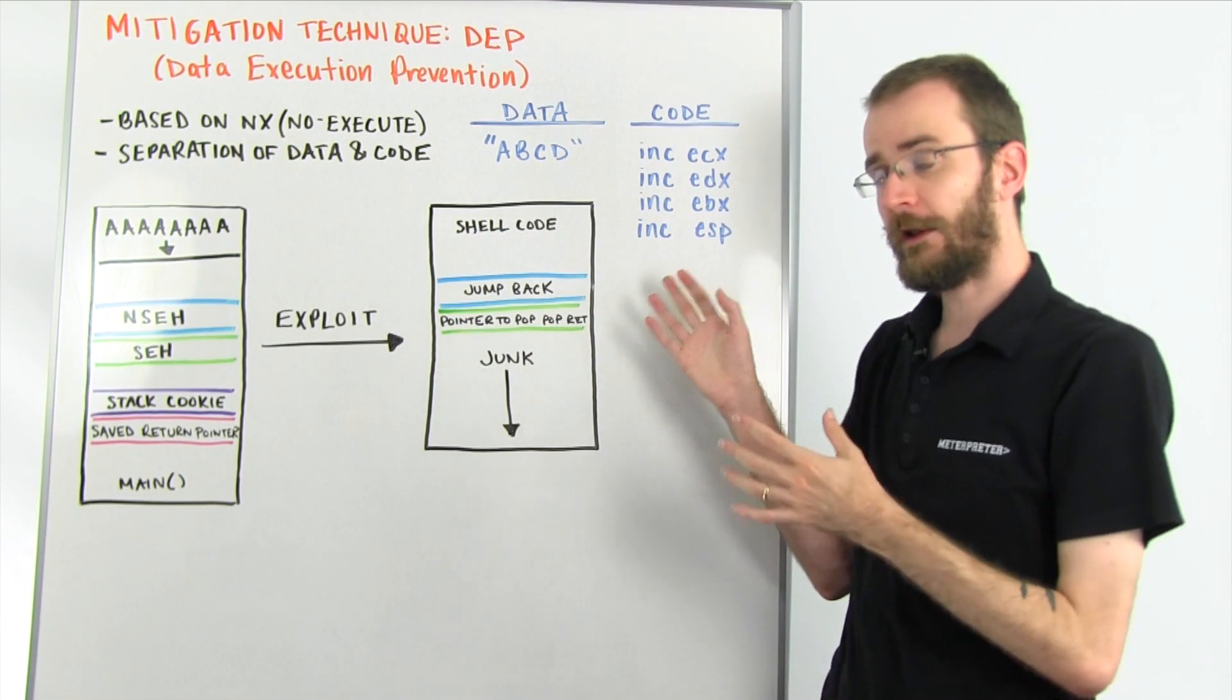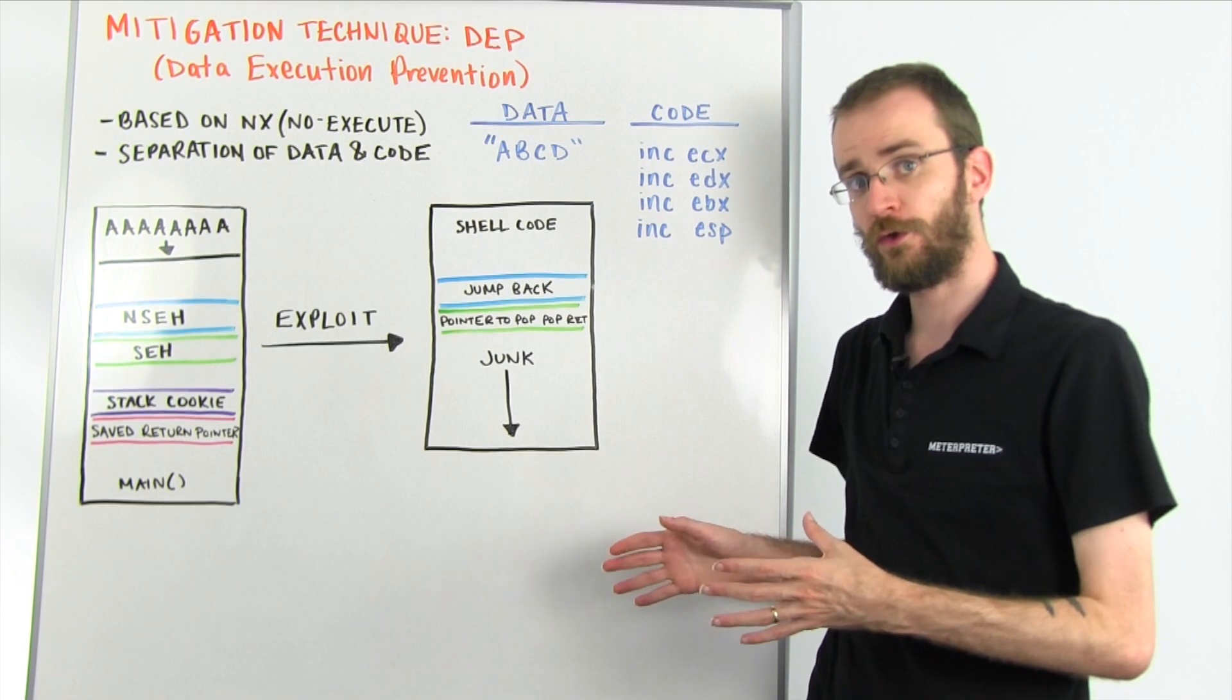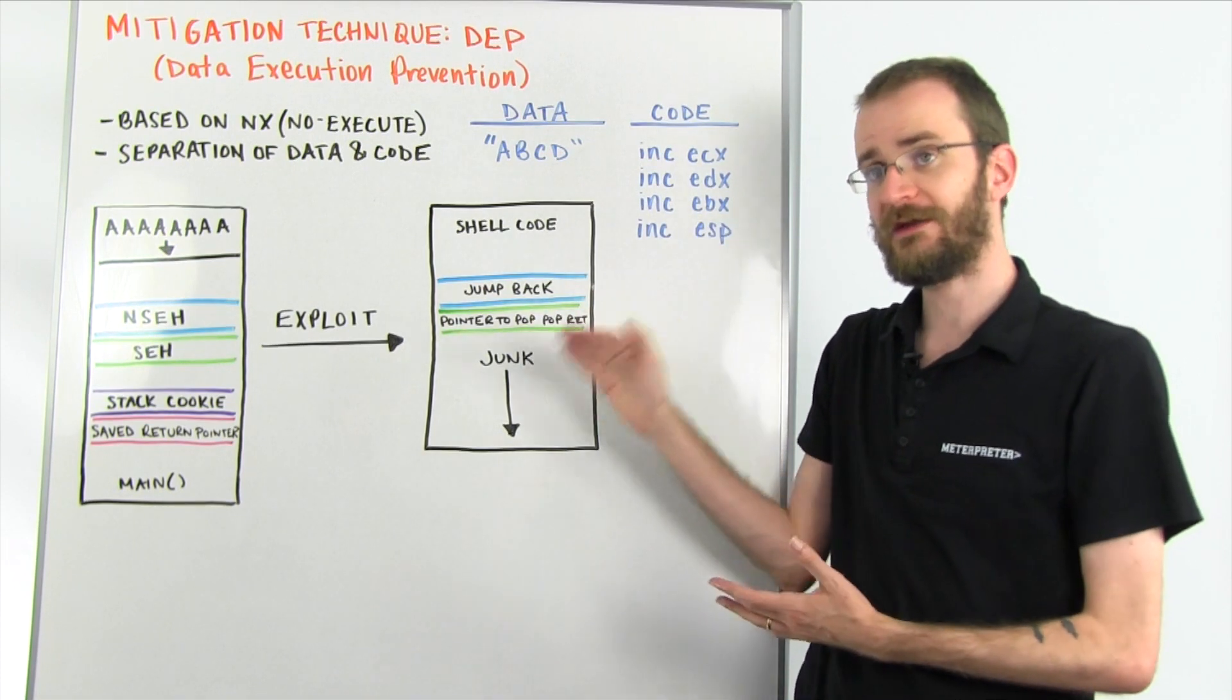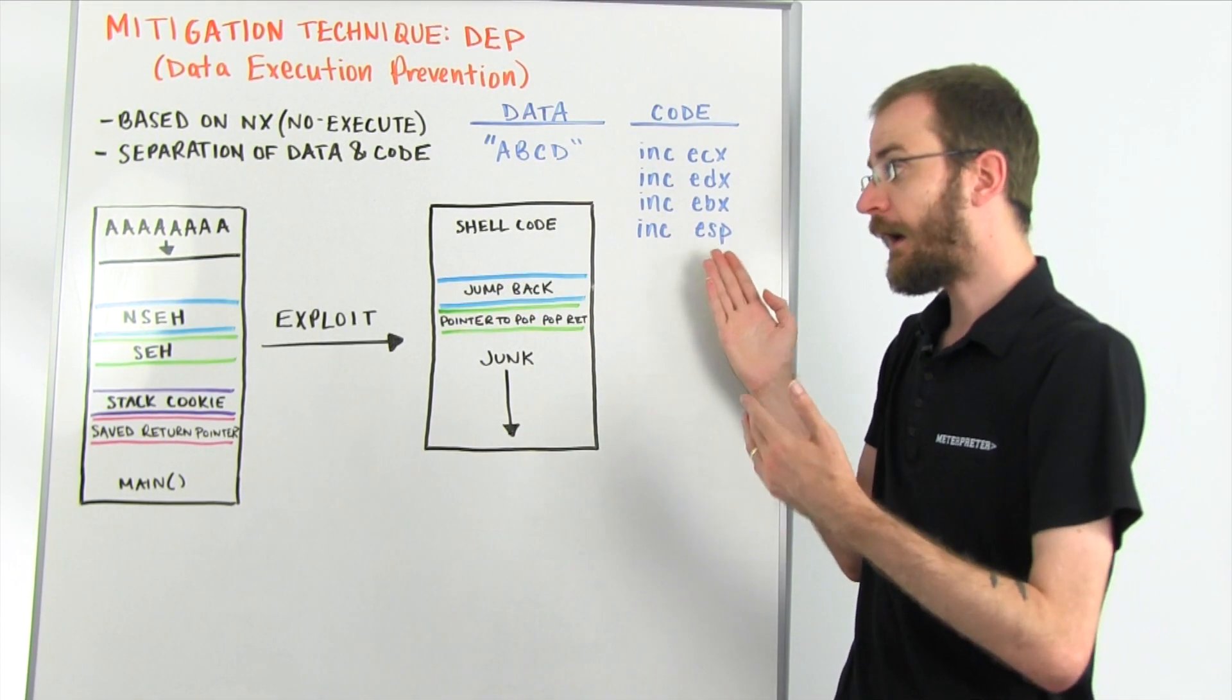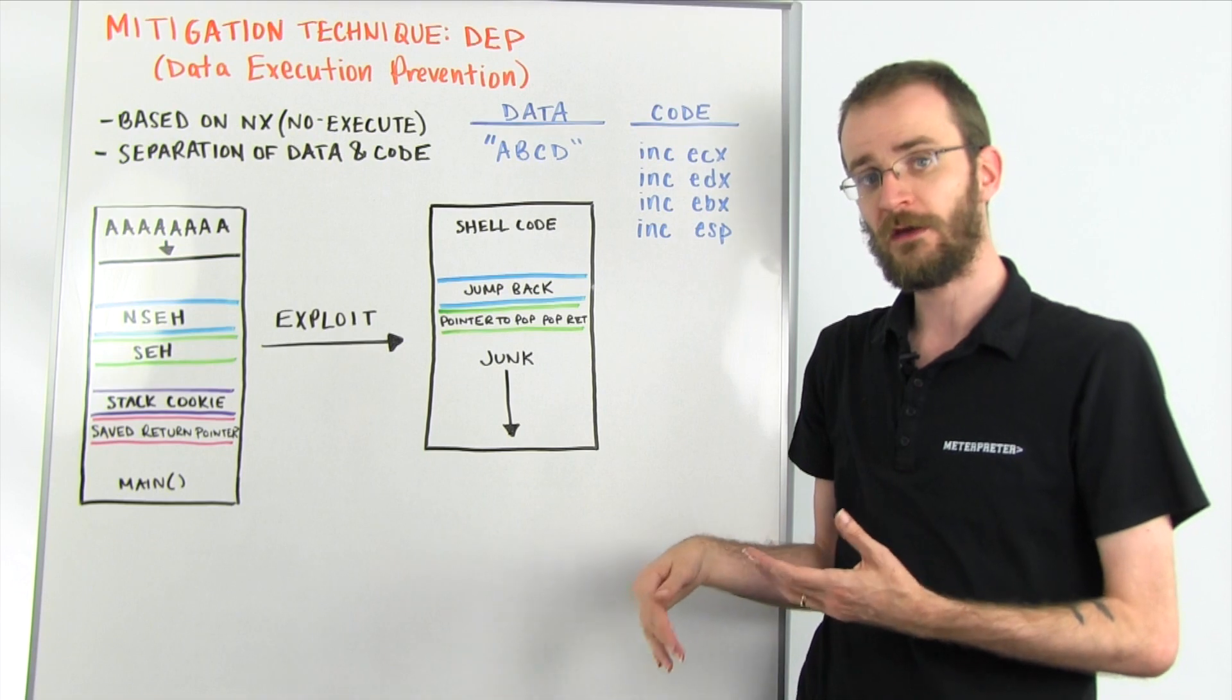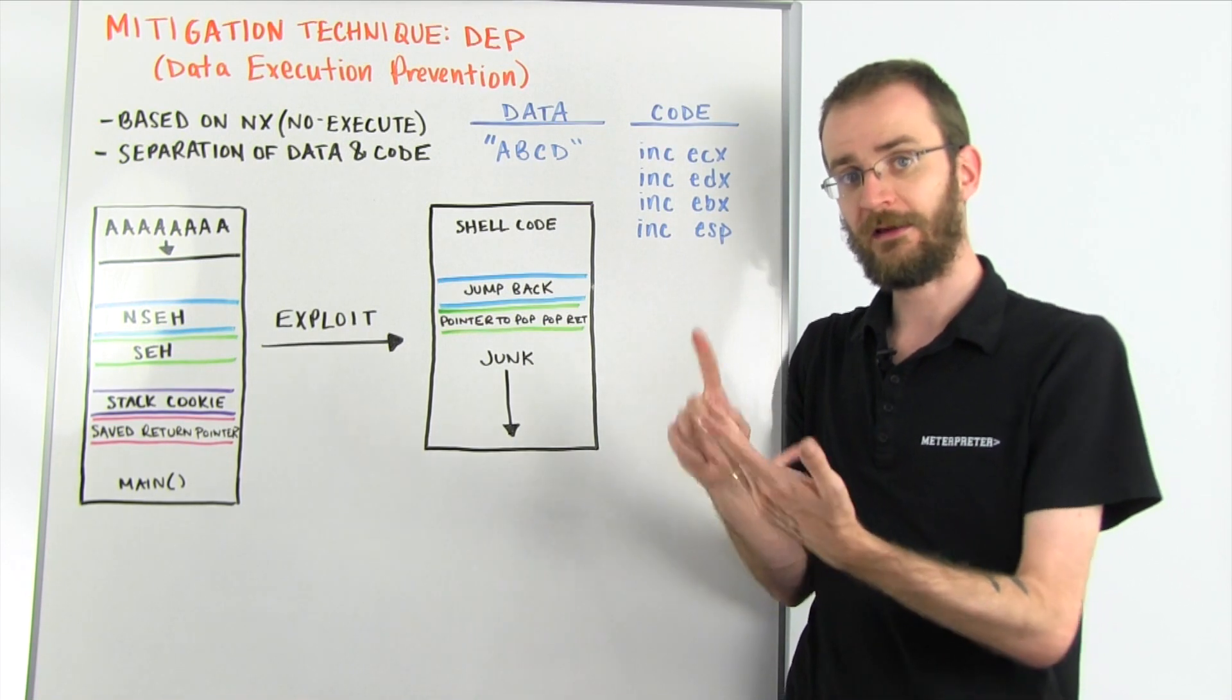Now, what DEP and NX set out to do is establish a proper boundary between data and code, and say that when something, for example, is on the stack, it should always be treated as data, and never interpreted as a set of instructions. And the way it does this is by maintaining permissions on sections of memory. Just like you have on a file, you have three basic permissions: read, write, and execute.